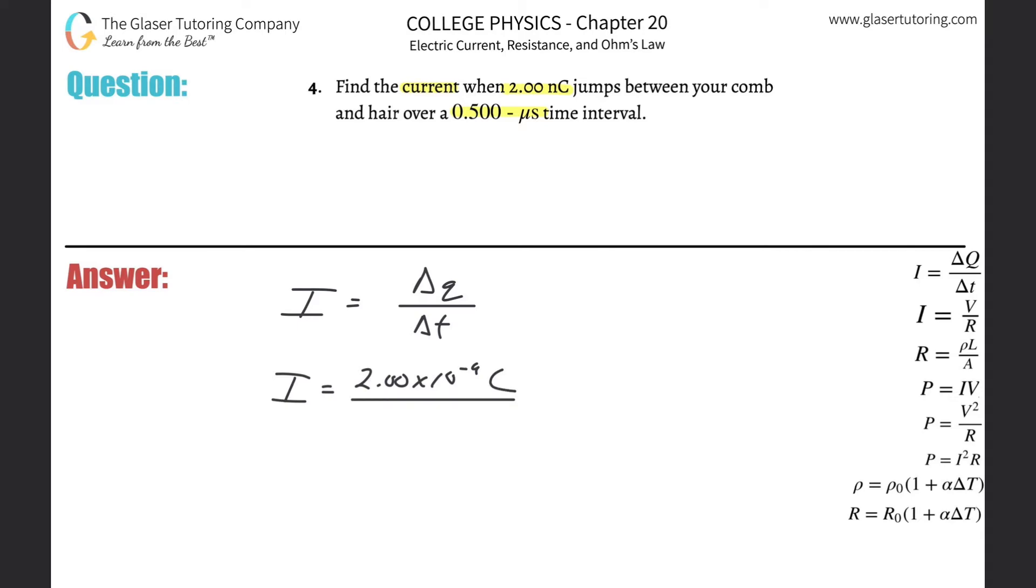Same thing with the micro. We have to know that the prefix for micro is 10 to the minus six. So just take that value and multiply it by 10 to the minus six. That's now in seconds.